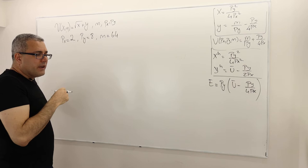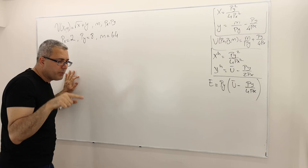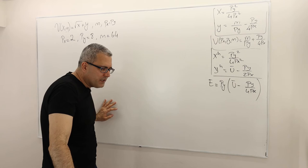Using the Slutsky Decomposition in Part E, or in Part F the Hicks Decomposition, we find the substitution and income effects on good Y. Part E is asking about good X. Part F is asking about good Y when the price of good X reduces to one.